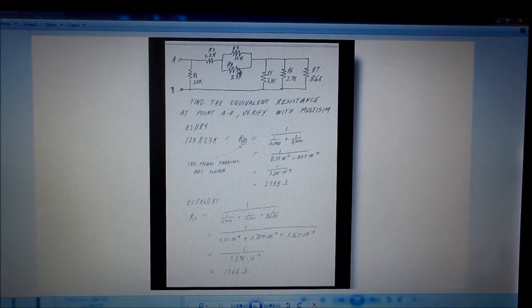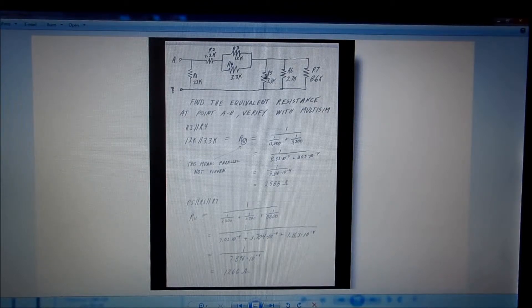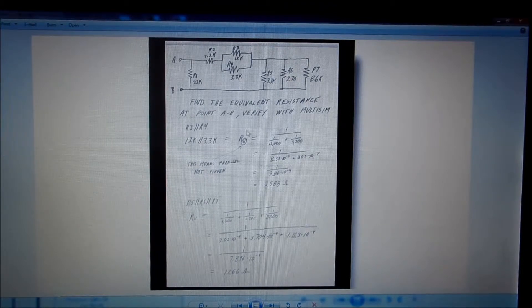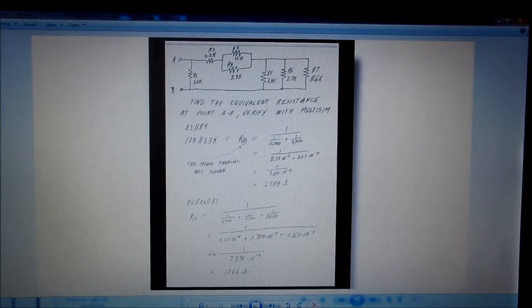So anyway, these two resistors in parallel work out to 2588. Then we have 5, 6, and 7 in parallel. They work out to 1266.